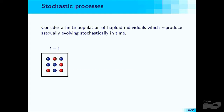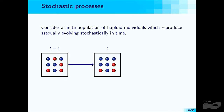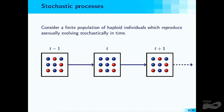The finite population problem: we have nine individuals divided into two types, blue and red. The state of the population is five (five blue individuals), or equivalently five-ninths as a fraction. The population evolves from time t−1 to time t with some time step delta t, and we need to impose an update rule — a rule giving the probability of transitioning from one population state to another.